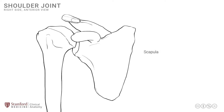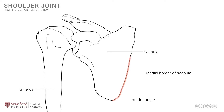The first one of these is the scapula, seen here as a large flat triangular bone. It articulates with the proximal end of the humerus, which is the single bone of the arm. The scapula has an inferior pointed end known as the inferior angle. From this inferior angle, two borders diverge away from each other: the medial border, traced out here, and the lateral border, traced out here in yellow.